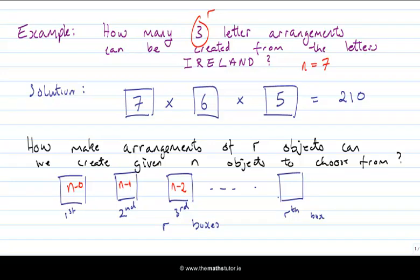Observe the pattern: when the box number is one, we subtract zero; when it's two, we subtract one; when it's three, we subtract two. So by the time we get to the rth box we're going to have n minus (r minus one), which is n minus r plus one. That's the number of choices for the rth box — the number subtracted from n is always one less than the box number. The fundamental principle of counting says we multiply all these choices together.